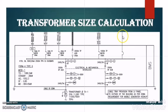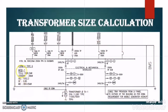The part 1 video was the conceptual video and in this video, we will take an example and based on the example, we will try to size the transformer. Here I took one SLD and from that SLD, this is the MDB panel — MDB 1. The total connected load on this MDB is 1080.3 kW. The standby load connected with this MDB is 28 kW and the actual connected load is total connected load minus standby load, that is 1052.3 kW.